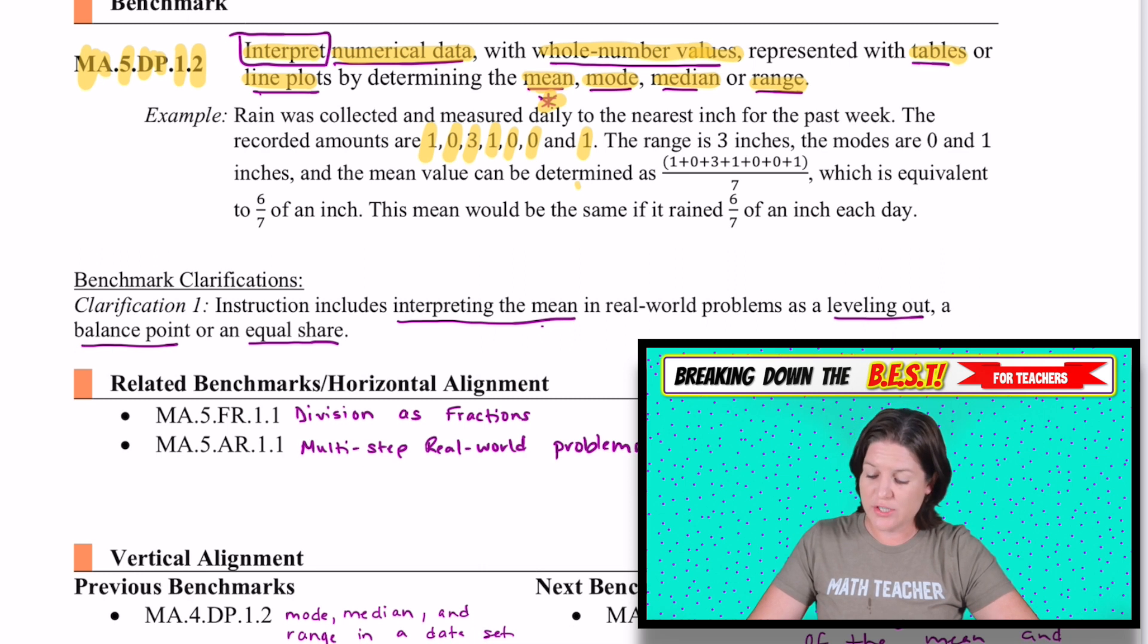So the range is 3 because when we subtract 3, the greatest number, minus 0, the least amount, we get 3 inches. The modes, there's two of them, 0 and 1 because we have 3 0s and 3 1s. So we have two modes here. Those are the values that occur the most often.